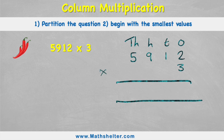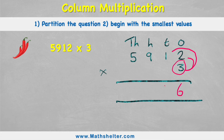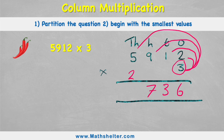Where do I start? That's right, my smallest value, which is this three here. So I'll do three times two — three times two is six. Now I move to the next smallest value, which is three times one — three times one is three. Keep going with the same pattern: three times nine is 27, so carry the two across and put seven in the answer row. And finally, three times five is 15, plus my two is 17. So my answer to 2,912 times three is 17,736.